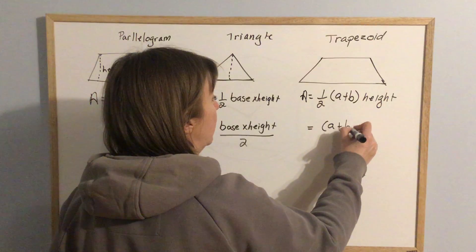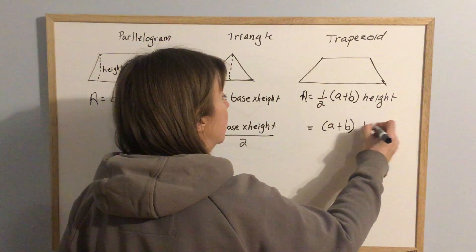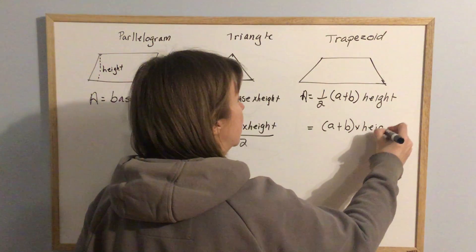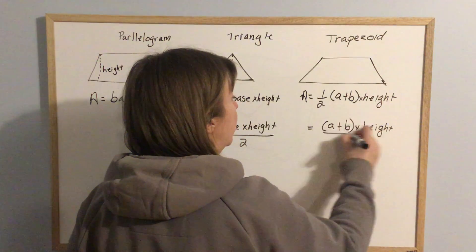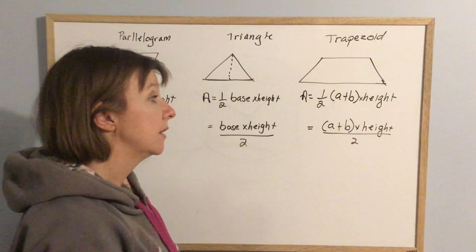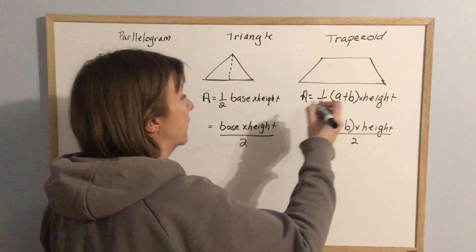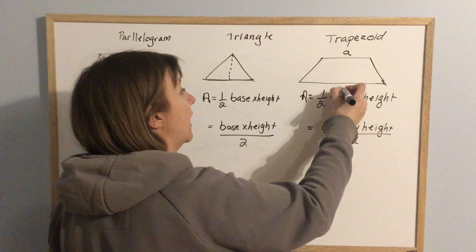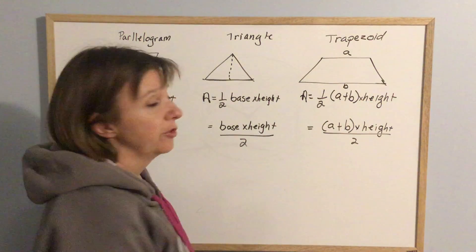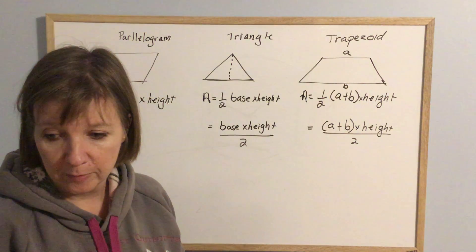Again, it could be A plus B times height and then divided by two. It's the same thing. So what this one means: A and B are the two lengths, A and B. So top is A, bottom is B.